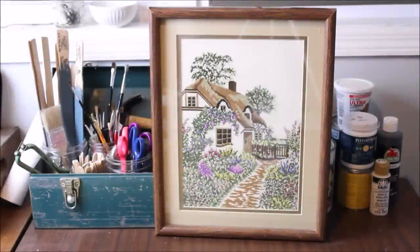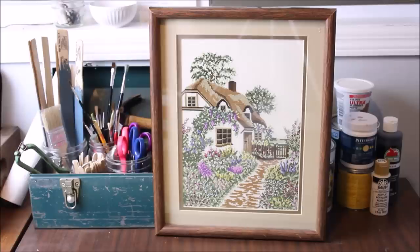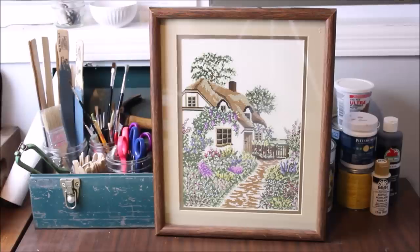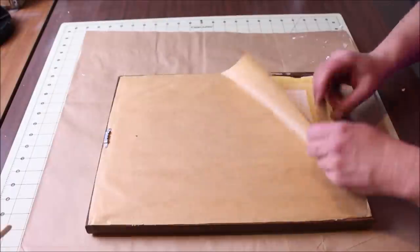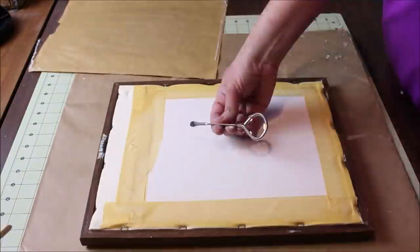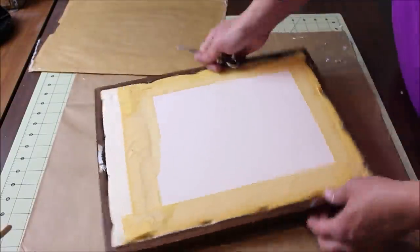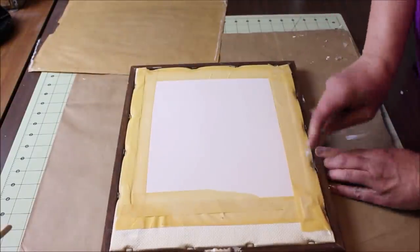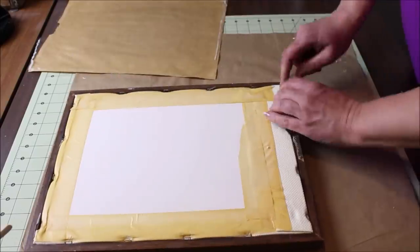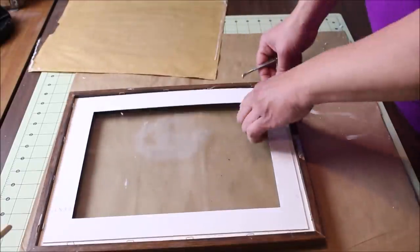Today's second project is updating this old frame and photo mat on this gorgeous piece of cross stitch. I started by taking it all apart, removing the paper backing, bending back the wire staples, removing the cross stitch itself, then followed by the mat and the glass.